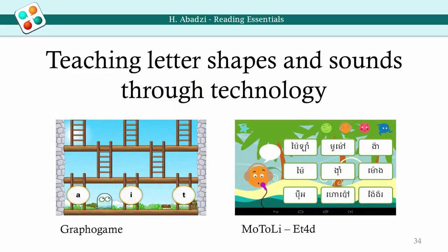In principle, textbooks could be superseded by digital devices. Information technology is very promising in basic literacy, and trials are underway by several NGOs. One example is the Finnish Grapho Game, and another is Motoli, adapted to Khmer. Zambian students playing 12 to 20 sessions of the Grapho Game in one month showed much improvement. Software logs made it possible, furthermore, to identify the confusing letters and processes that students use to distinguish letters. Nevertheless, sustainability in low-income countries is a problem.